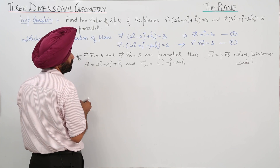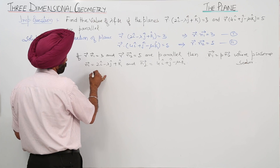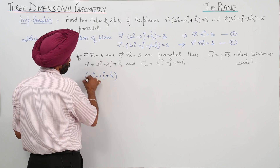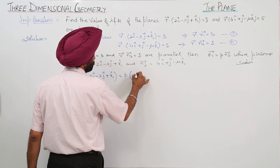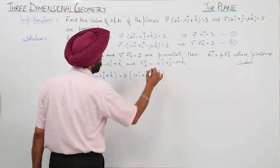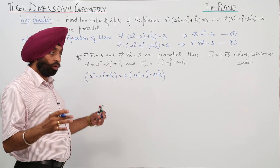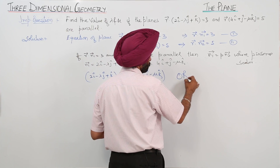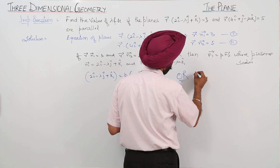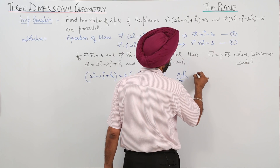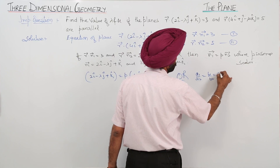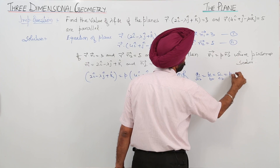So 2i cap minus lambda j cap plus k cap equals p times (4i cap plus j cap minus mu k cap). Comparing coefficients, we can write a1 upon a2 equals b1 upon b2 equals c1 upon c2 equals p.